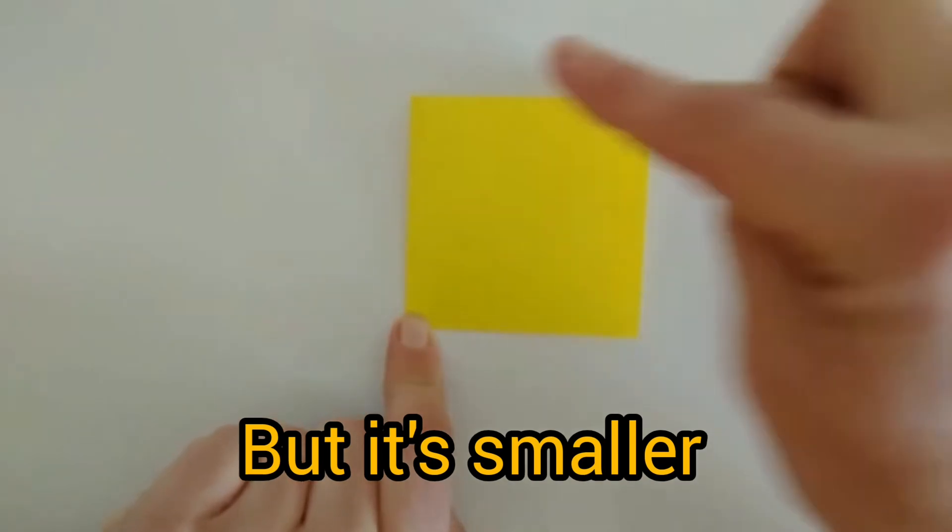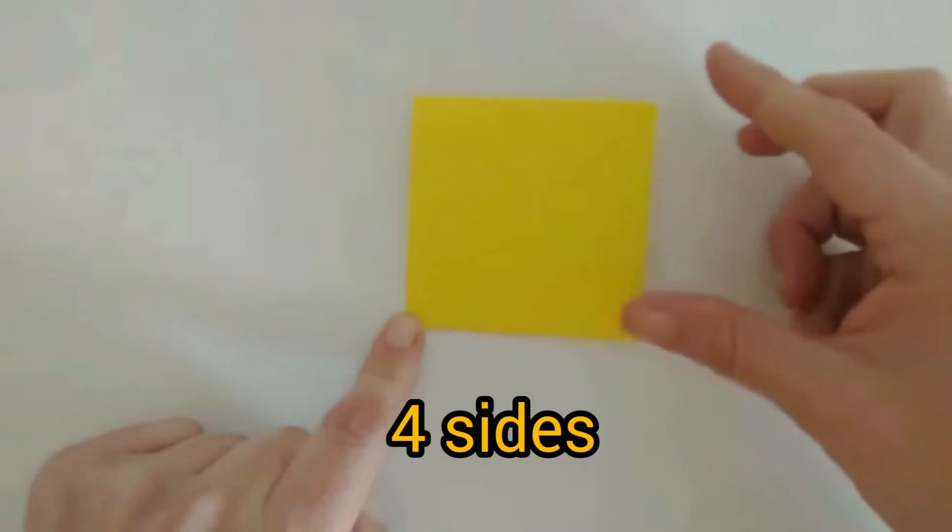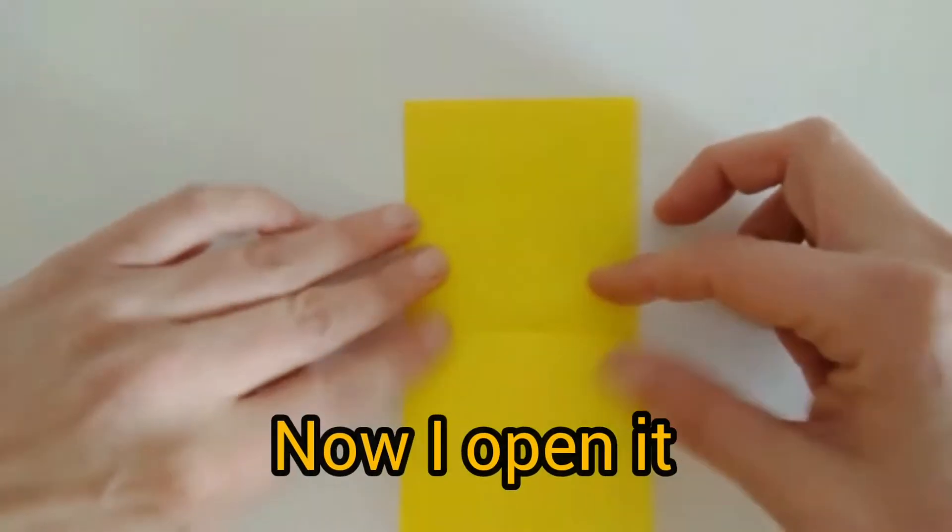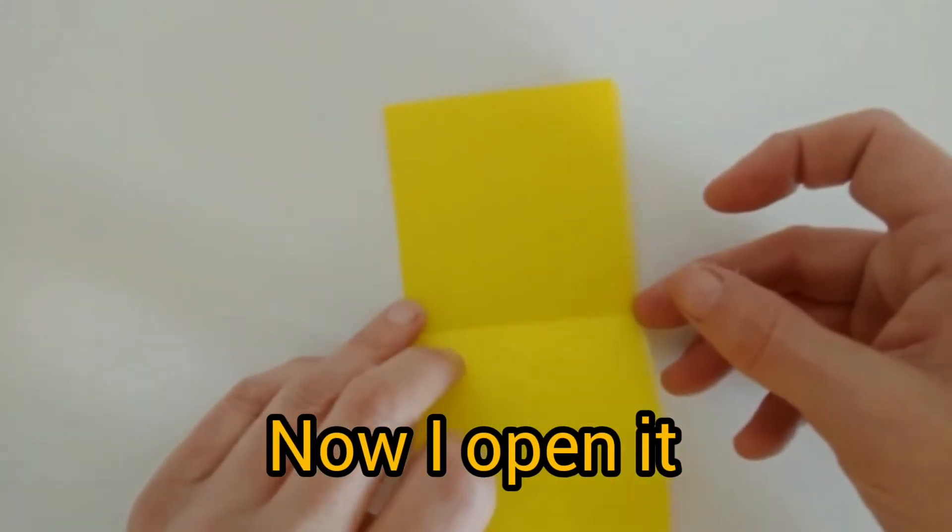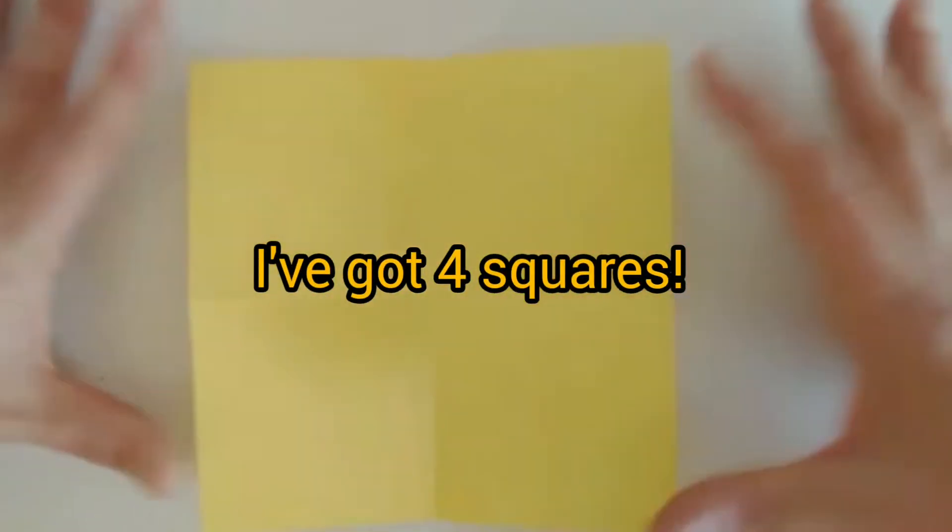Let's count the sides. One, two, three, four. Four sides. And now I open it. Look! I've got four squares.